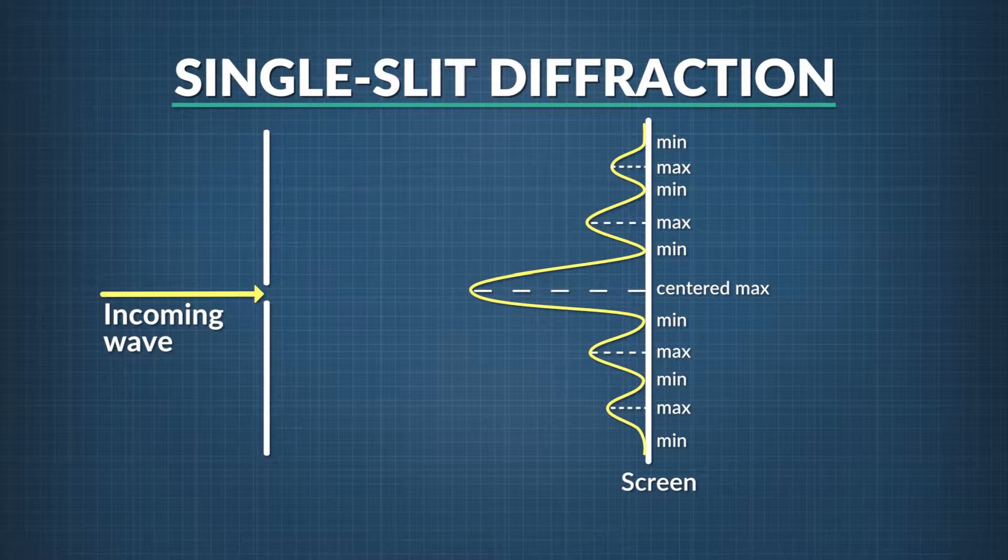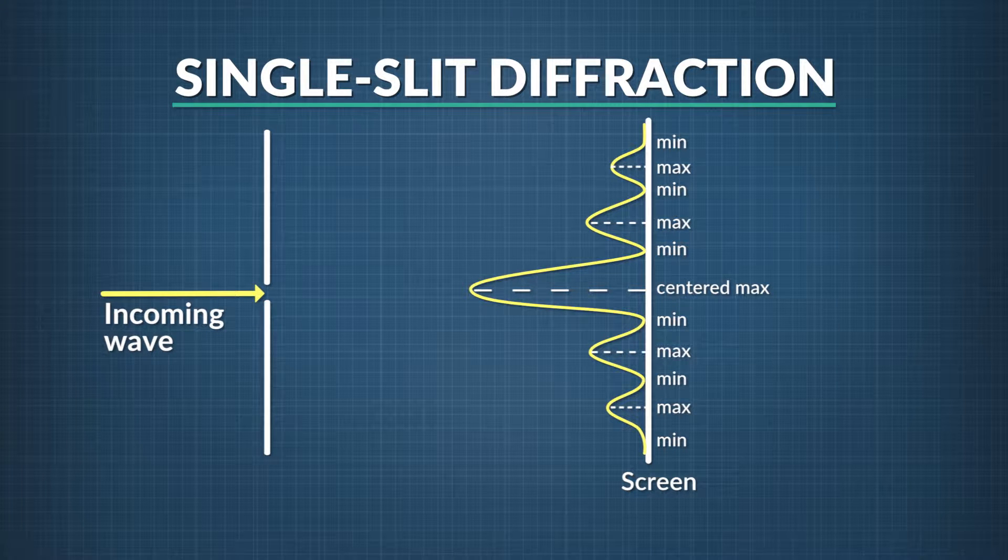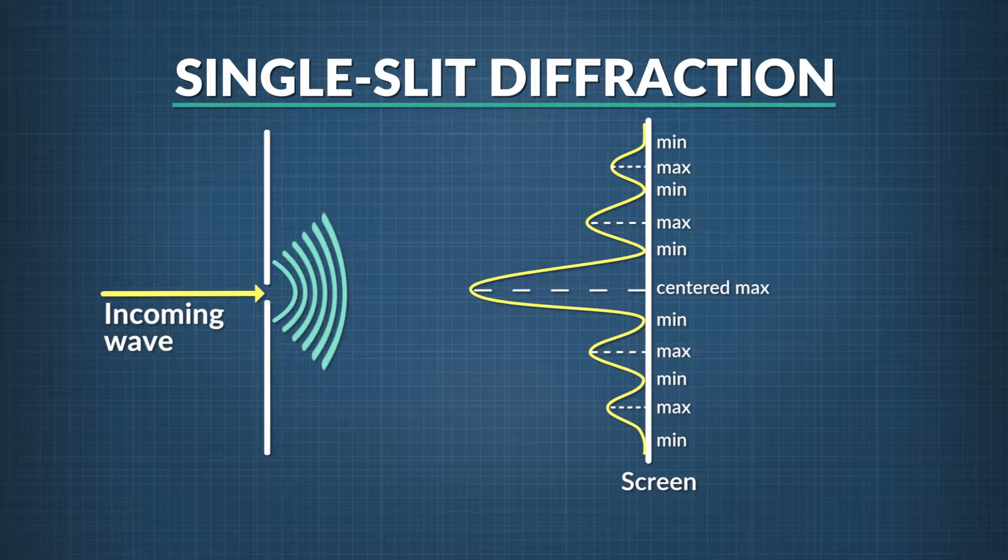One way to see diffraction and interference in action is to send a wave through a narrow slit and look at the wave pattern that appears on the other side.